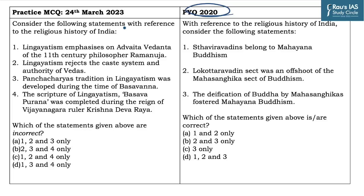On similar lines, we have framed one practice MCQ which says: consider the following statements with reference to the religious history of India — you need to identify the incorrect statements. The first statement says Lingayatism emphasizes on Advaita Vedanta of the 11th century philosopher Ramanuja — it is an incorrect statement. The second statement says Lingayatism rejects the caste system and authority of Vedas — it is a correct statement as Lingayatism rejects any form of social discrimination including the caste system and authority of Vedas.